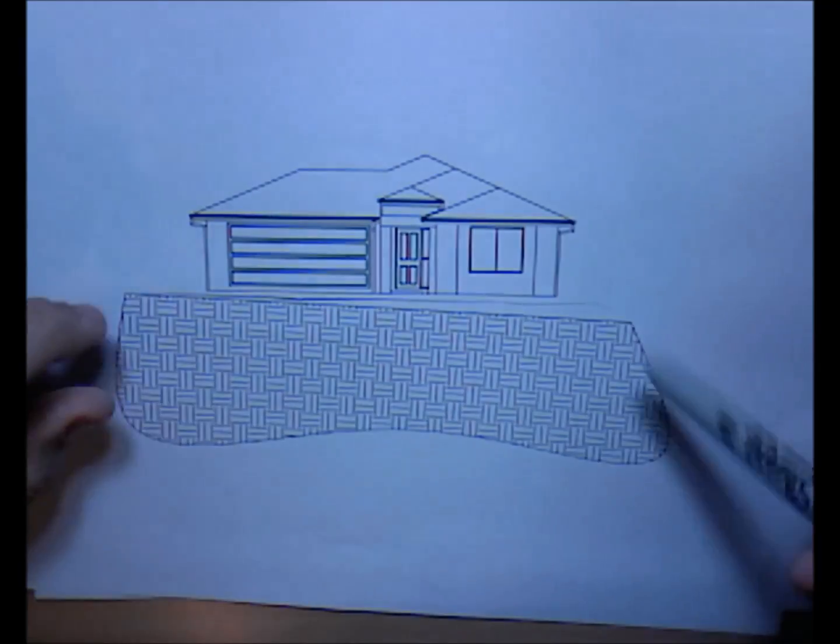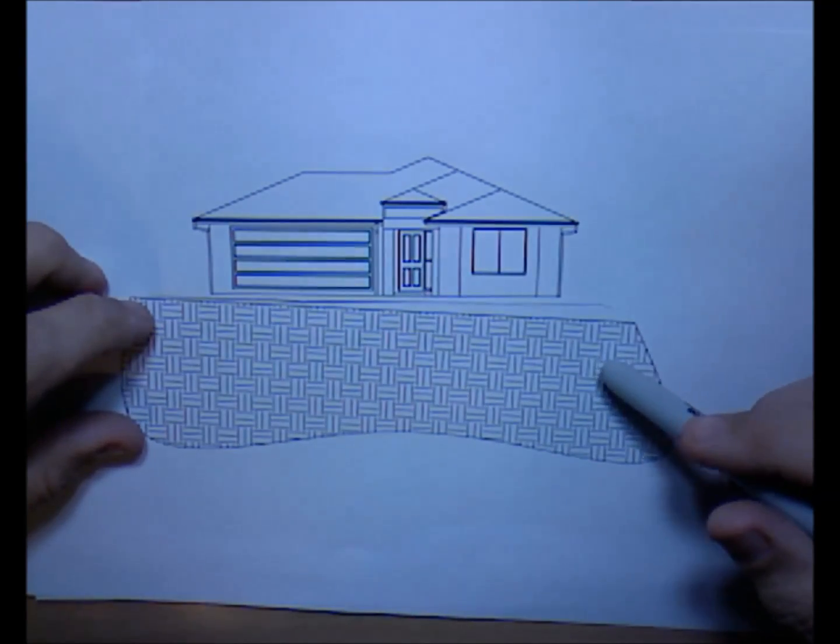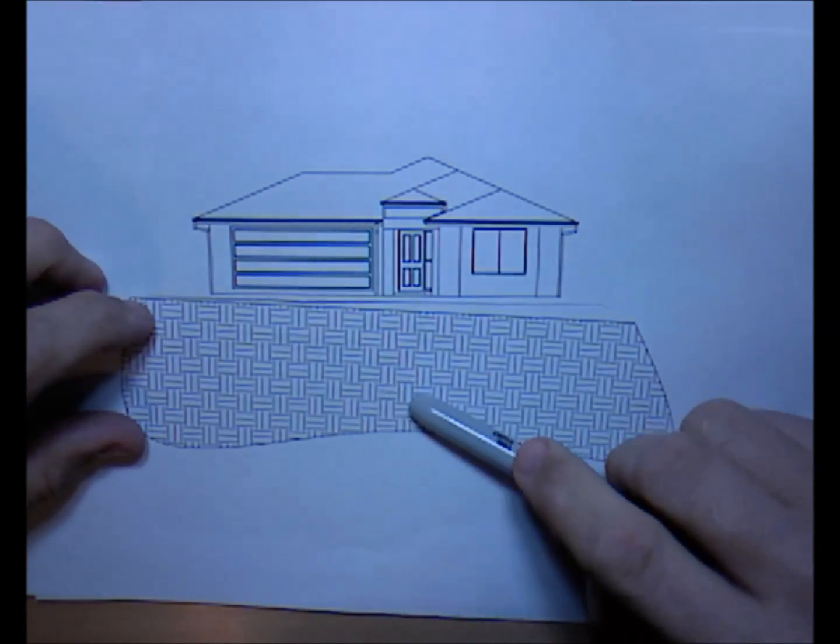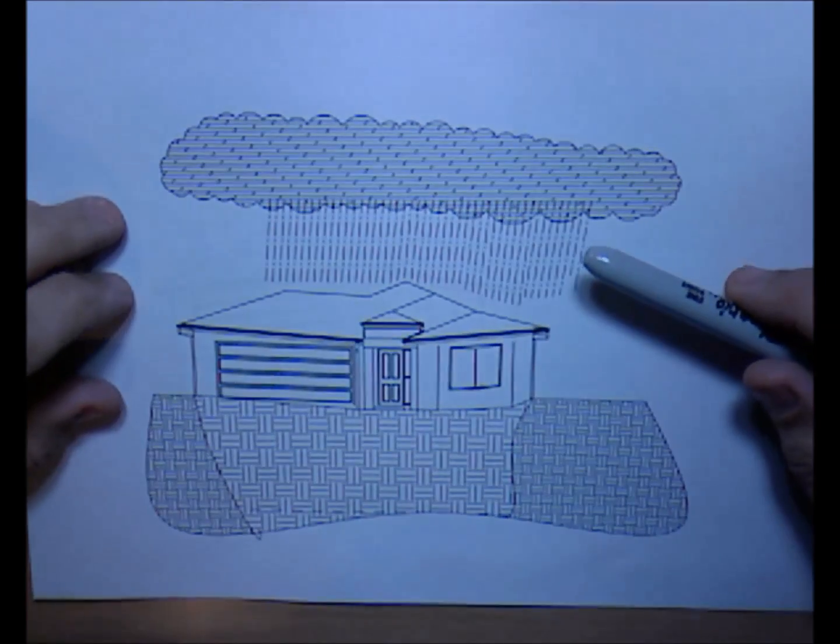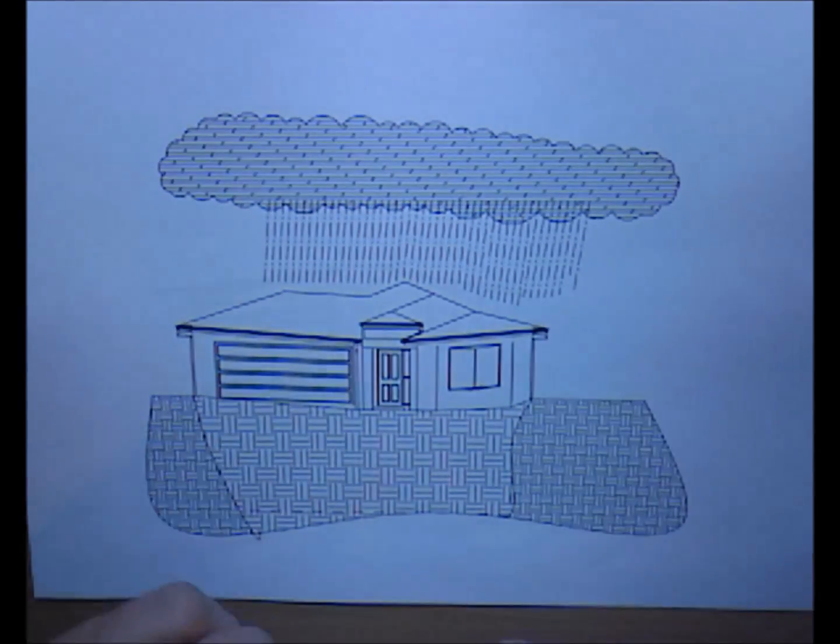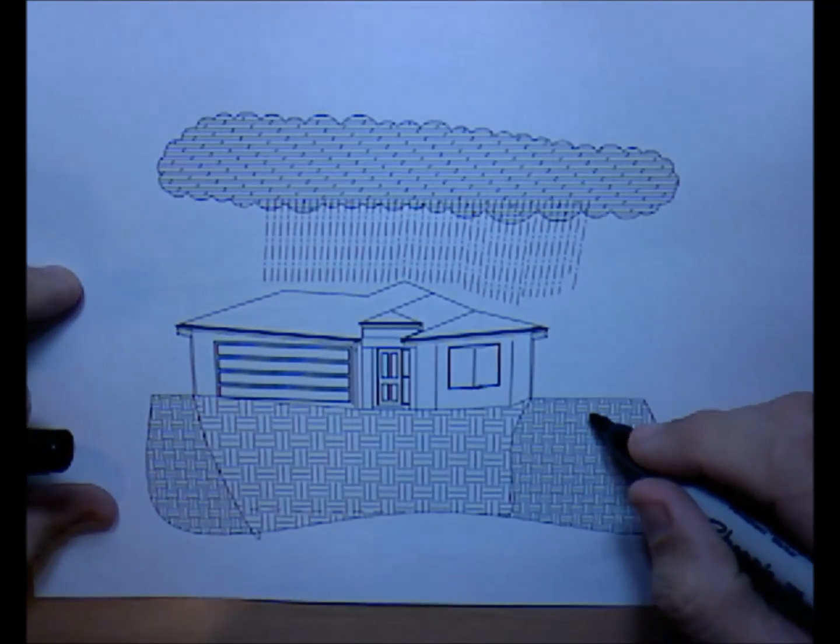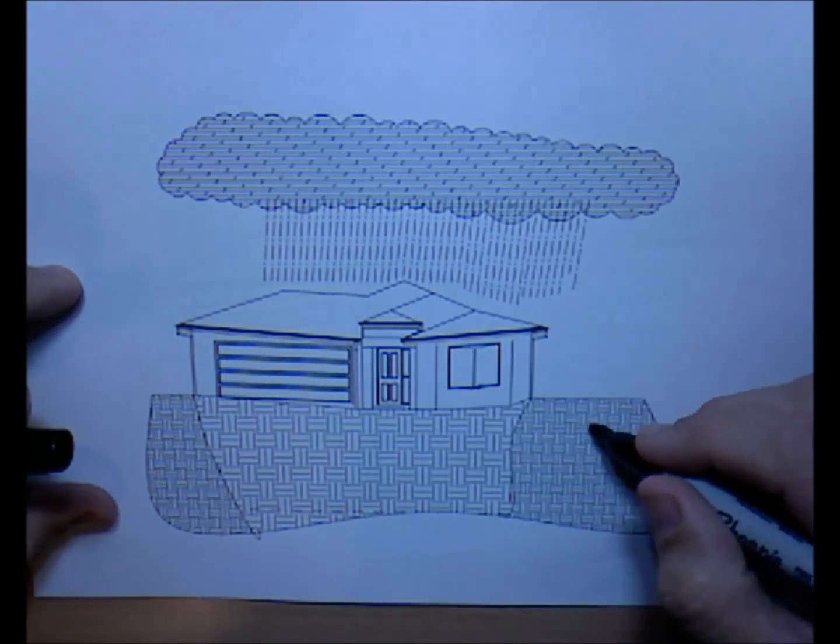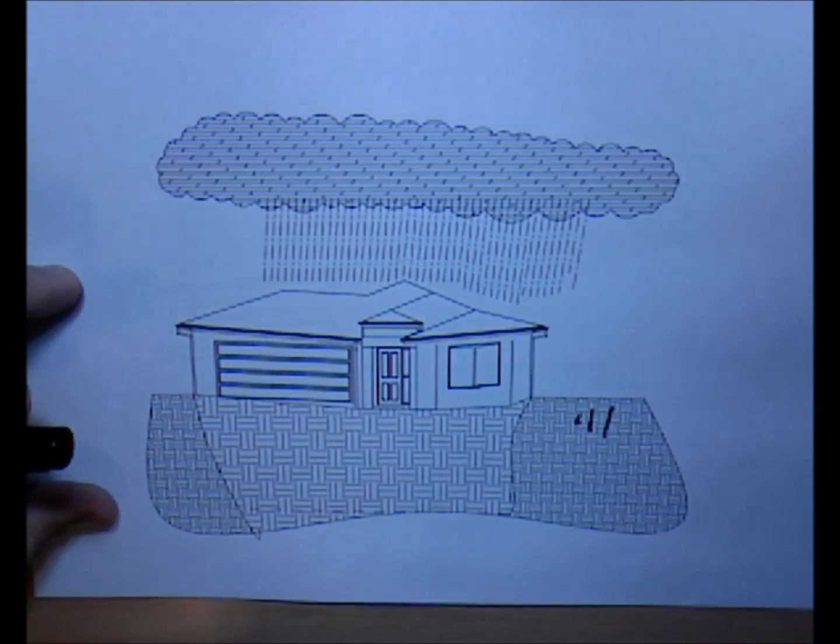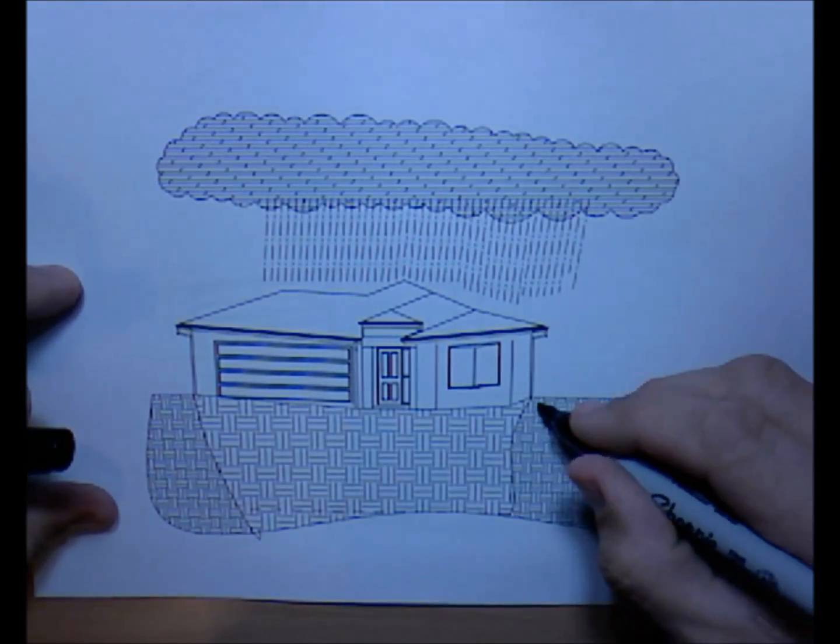Slab heave occurs in clay soils when the soil moisture conditions under the house are no longer uniform. When the soil around the outside of the house becomes wet, the clay soils absorb moisture and expand. The expansive forces are large enough to lift a house.